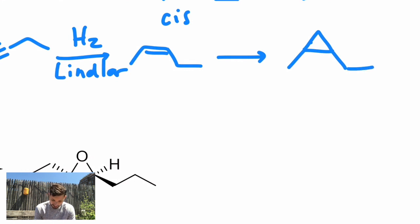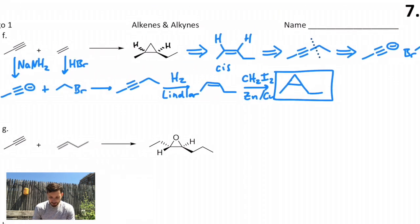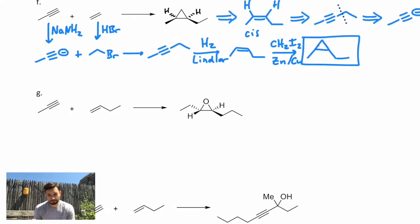That's the Simmons-Smith reaction. So diiodomethane CH2I2 with zinc and copper. And that's how you get your cyclopropane. So we did it in effectively four or five steps. Let's try another one.